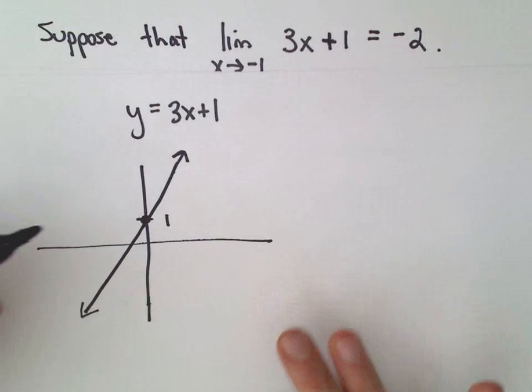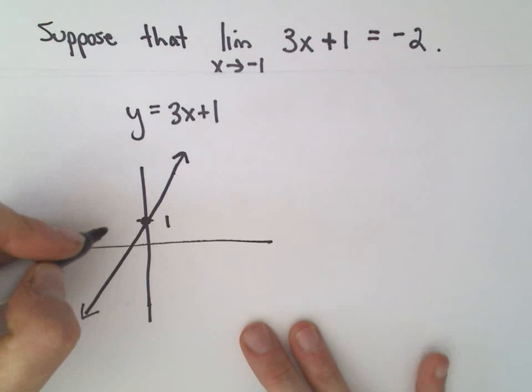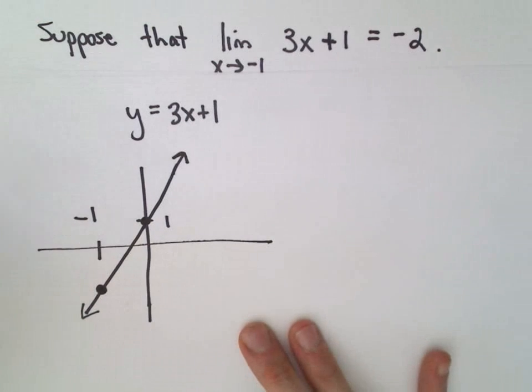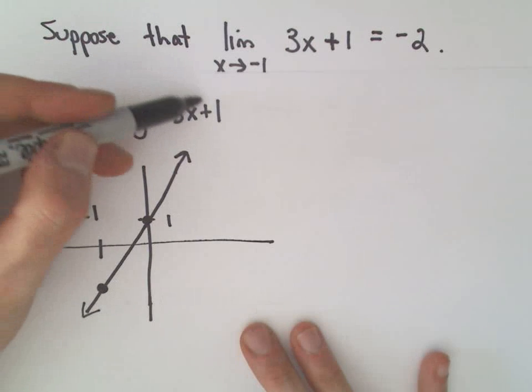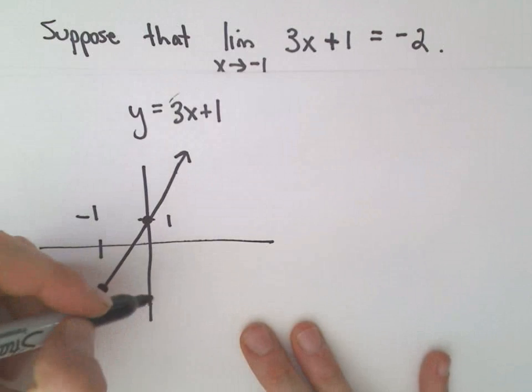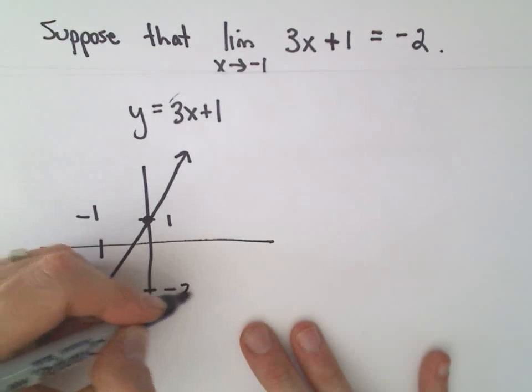All right, so just to give myself a little bit of room here, let's suppose here's going to be x equals negative 1. So notice again, if we plug in negative 1 into our function, we would get 3 times negative 1, which would be negative 3. Negative 3 plus 1, well, hey, that would give us negative 2.